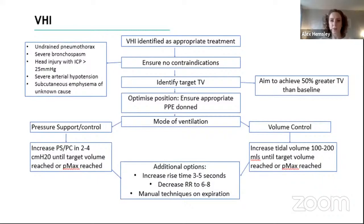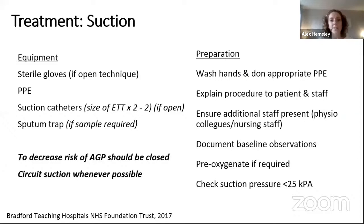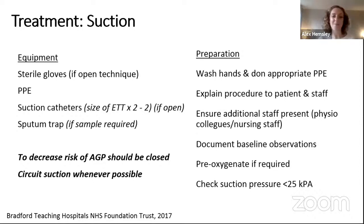For suctioning an intubated and ventilated patient, a closed circuit suction system is strongly recommended — it reduces aerosol-generating risk and is safer for the patient as it avoids disconnecting them from the ventilator. Where closed circuit suction is unavailable, sterile gloves are needed for open technique. Equipment required includes sterile gloves, full PPE, suction catheters, and a sputum trap if a sample is needed. Sputum samples are the best method for checking for ventilator-associated pneumonia microbiology and also the best way to get COVID-19 results.